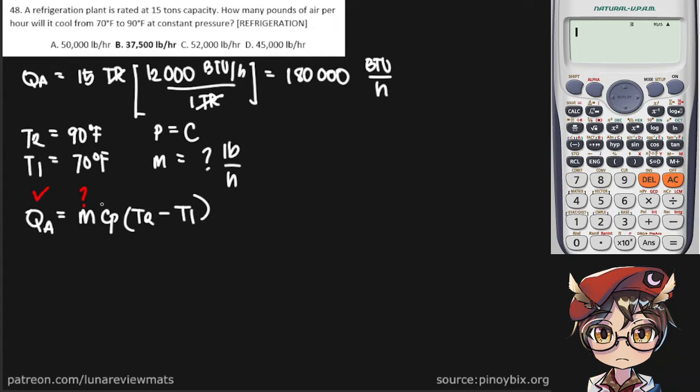We have our QA. We have C_p at 0.24 BTU per pound degrees Rankine. And we have T2 and T1. We can simply start putting the values in now.